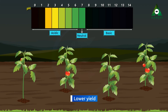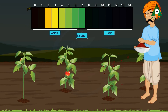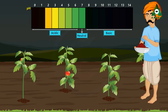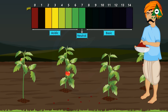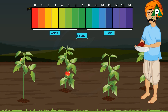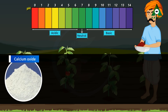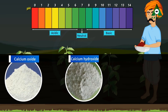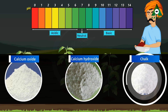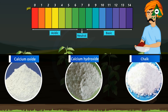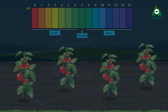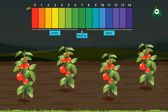If the pH value of soil is found lower than 7, i.e. the soil becomes acidic, the soil is treated with calcium oxide, calcium hydroxide, or chalk. After treatment, the excess acid present in the soil is neutralized and the soil becomes fertile again.